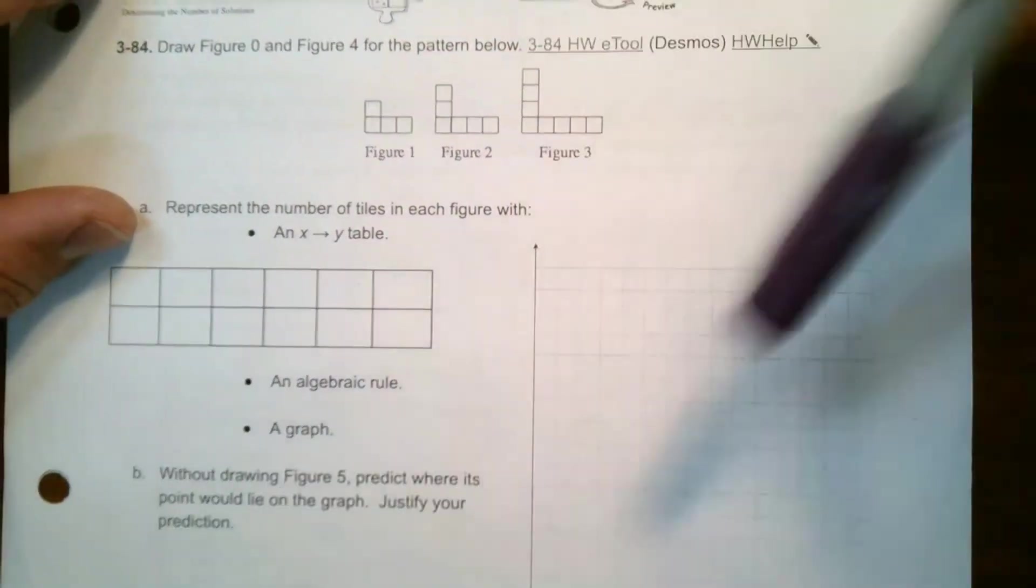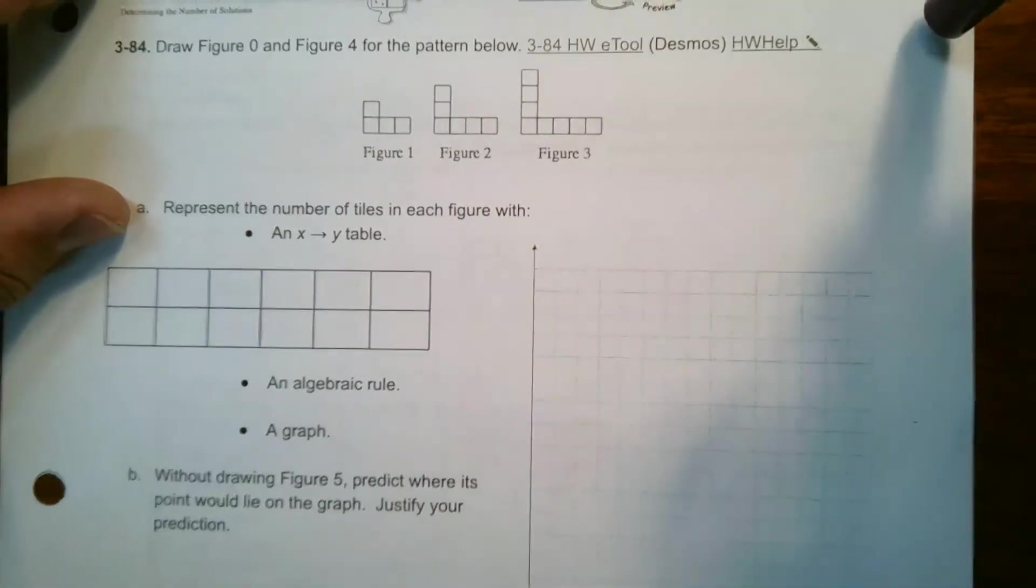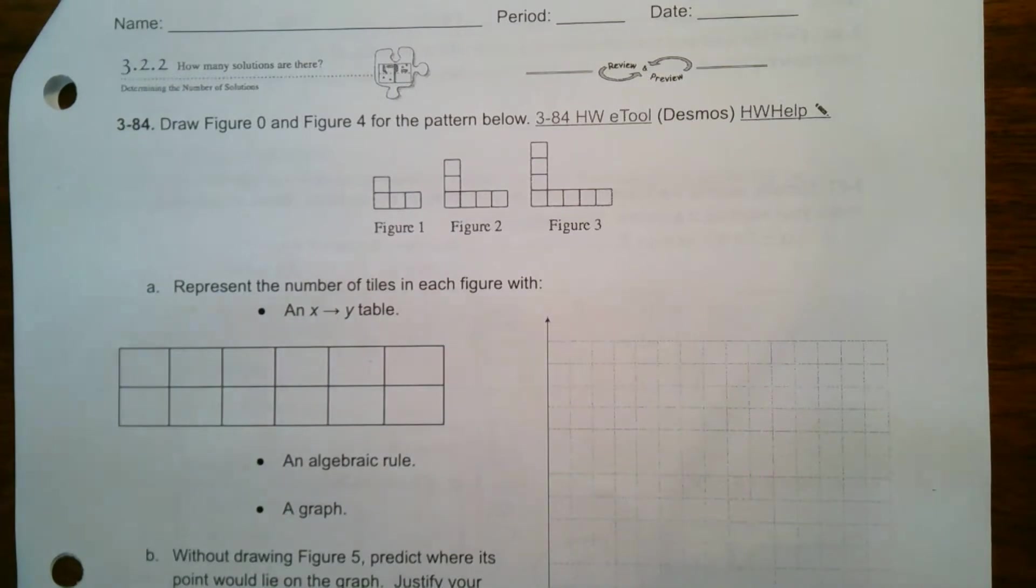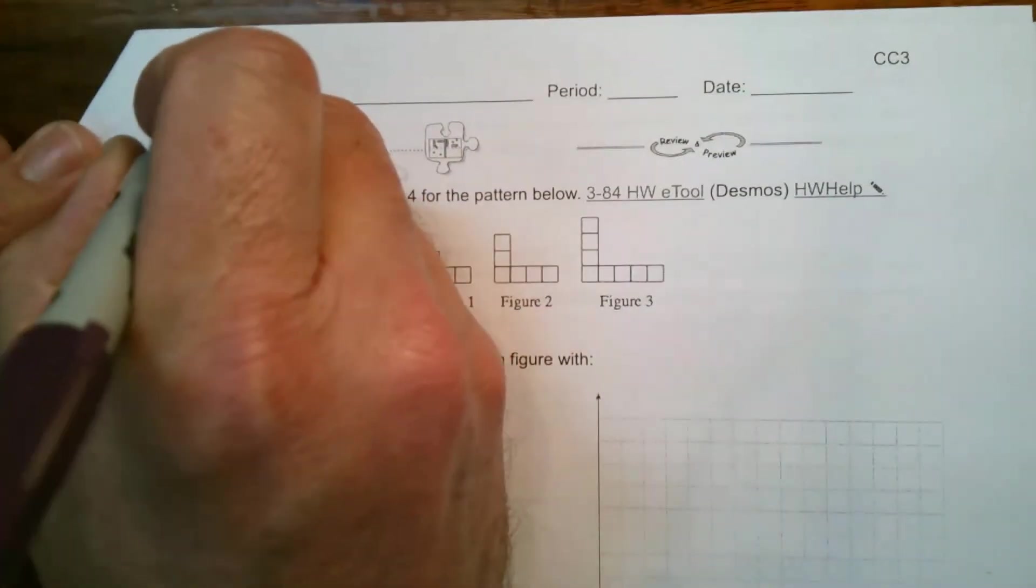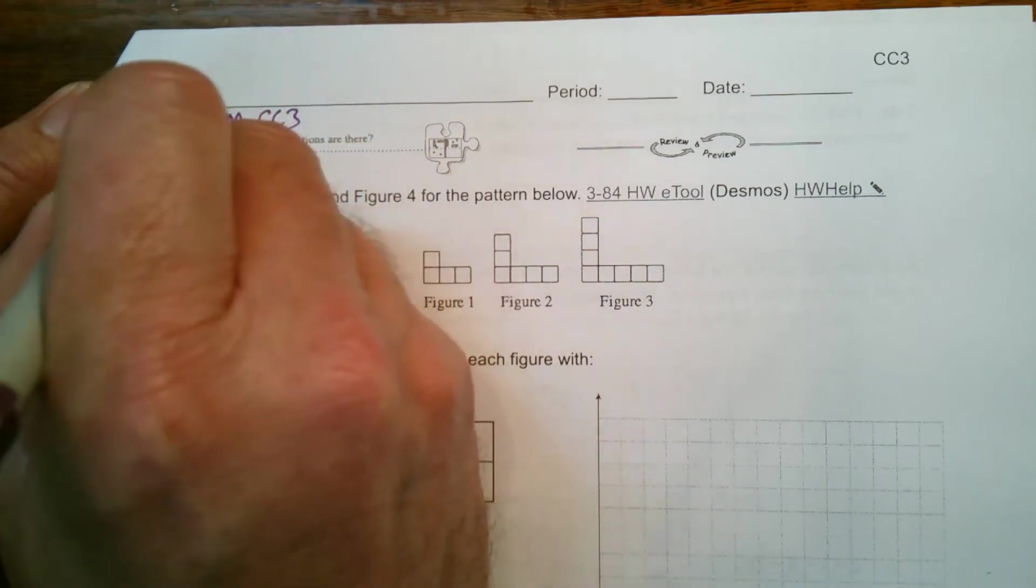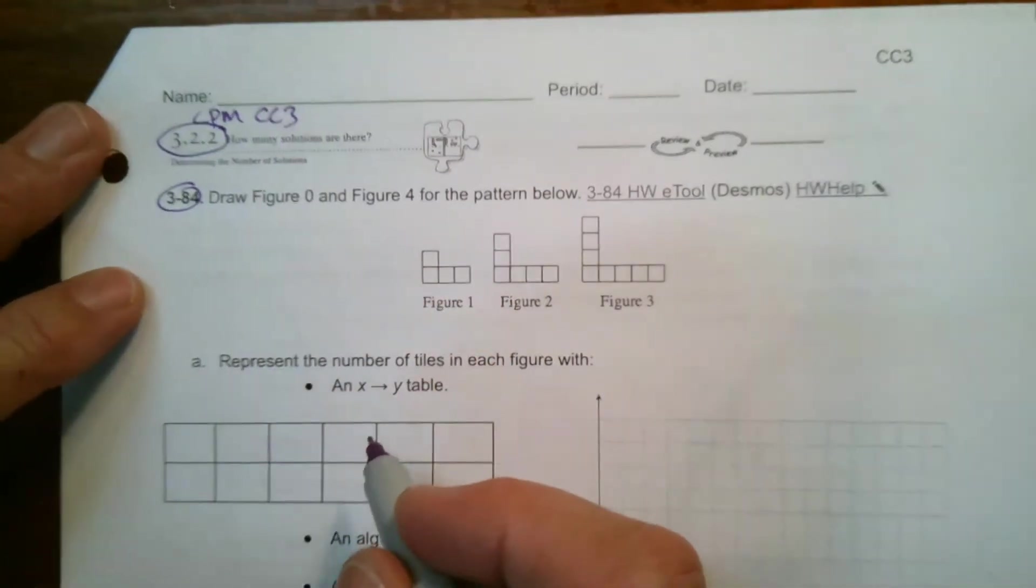And then determining what figure five would be from my graph. Okay, so a lot there but we'll go through this. This is a problem that is coming from CPM and this is course three section 3.2.2 number 3-84.